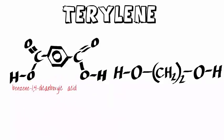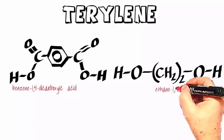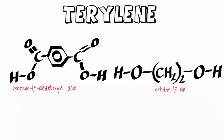The dicarboxylic acid is called benzene 1,4-dicarboxylic acid, and the diol is known as ethane 1,2-diol.